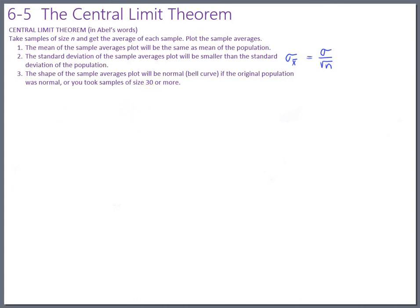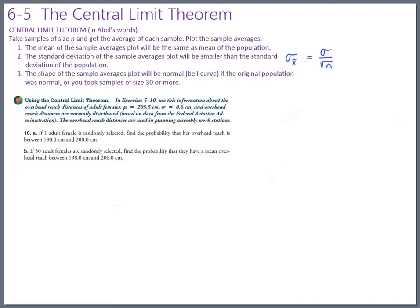Let's see how that works out with an actual homework problem — number 10. It does the basic idea. Number 10 gives you some normally distributed data with a mean and a standard deviation. This is how high adult females can reach — overhead reach distance. Part 10A says if one adult female is randomly selected, find the probability that her overhead reach is between 180 and 200. This is not Central Limit Theorem — that'll come in part B. Part A is just about one person; part B is about a group.